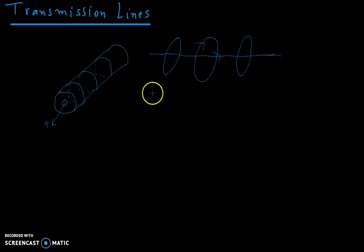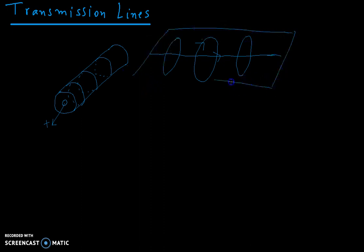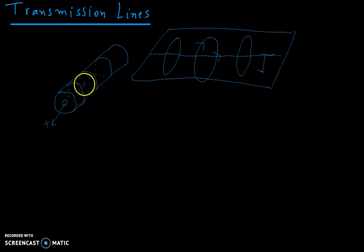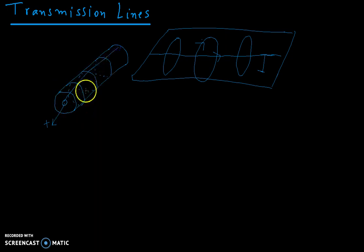If you consider other wires or a ground plane nearby — for example, if this is a PCB with a ground plane below the wire — then there will be a capacitance between the wire and the ground plane. But if the ground plane is very far away, that capacitance is negligible. This is not the case for a transmission line, especially a coaxial cable, where you have a ground plane all around the signal wire. So there is capacitance everywhere along the line.